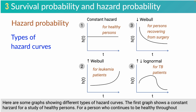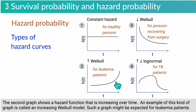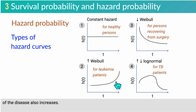Here are some graphs showing different types of hazard curves. The first graph shows a constant hazard for a study of healthy persons. For a person who continues to be healthy throughout the study period, his or her hazard rate remains constant throughout the follow-up period. The second graph shows a hazard function that is increasing over time — an example is an increasing Weibull model. Such a graph might be expected for leukemia patients not responding to treatment where the event of interest is death. As survival time increases, and as the prognosis worsens, the patient's potential for dying of the disease also increases.